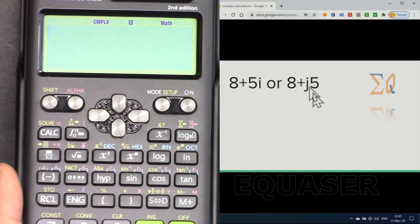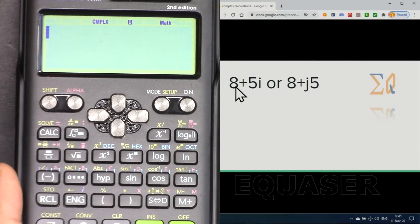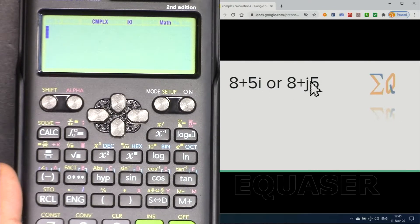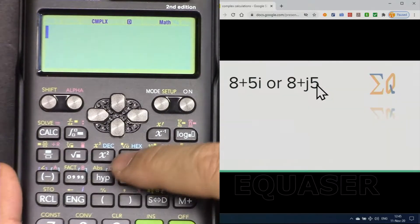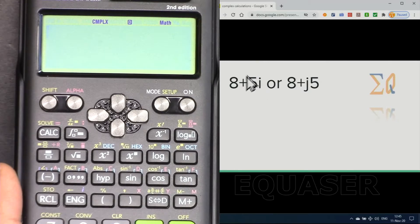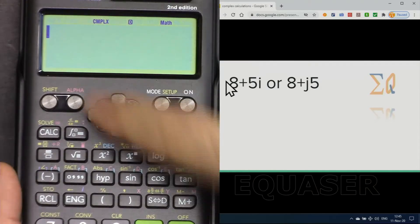In some courses you will see, for example, x plus 5i or x plus j5. In this calculator we are using i. When you have i or j beside a value, either in front of it or behind it, it is the imaginary part and this is the real part.